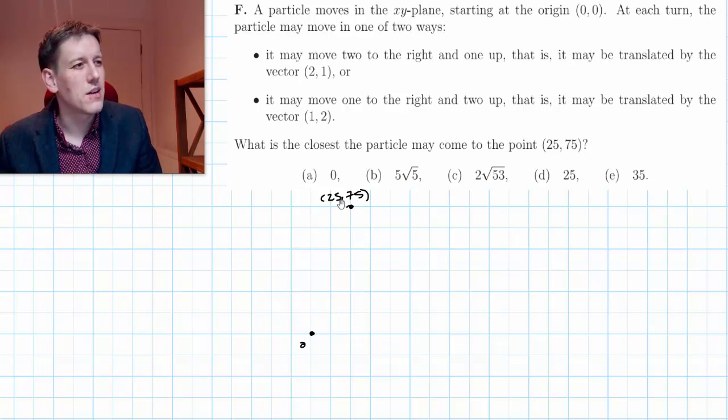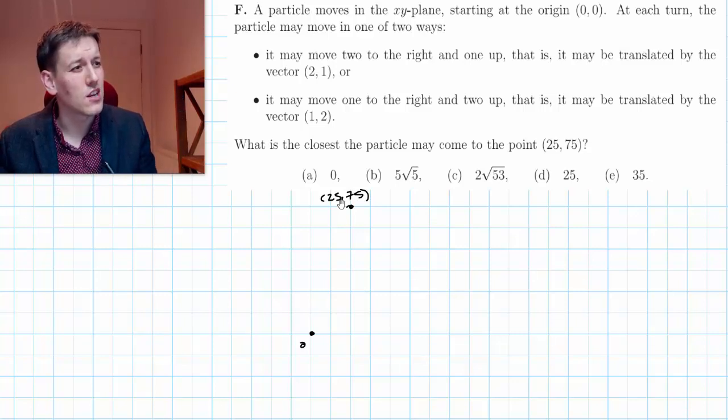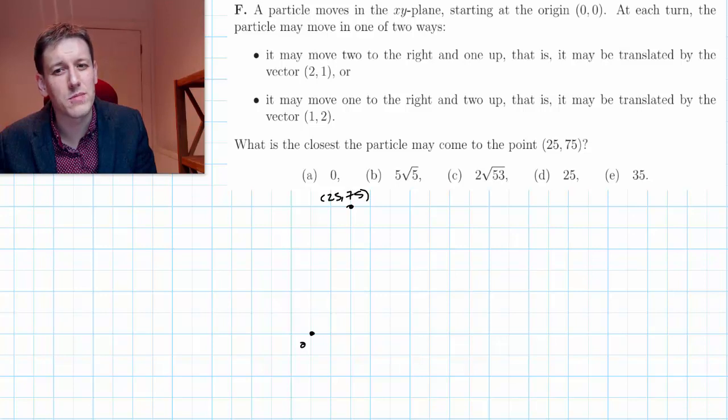We notice that (25, 75) means the ratio of up moves to right moves would be three to one. So to get as close as I can to this point, it feels like my best option is to always go up as far as I can. I want to make all of my moves across one and up two.